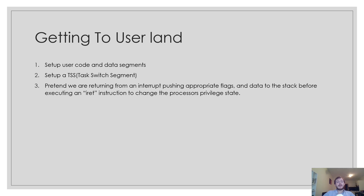Getting to userland can be quite complicated to implement. I'm going to briefly go through the steps before we start writing any code. At the very start of the protected mode section, we set up kernel segments — kernel code segment and kernel data segment. Userland has its own user code and data segments, much like kernel code and kernel data segments, so we need to set those up. The next step is to set up a task switch segment. The final step is to pretend we are returning from an interrupt, pushing appropriate flags and data to the stack before executing an IRET instruction, which will force the processor to change its privileged state.